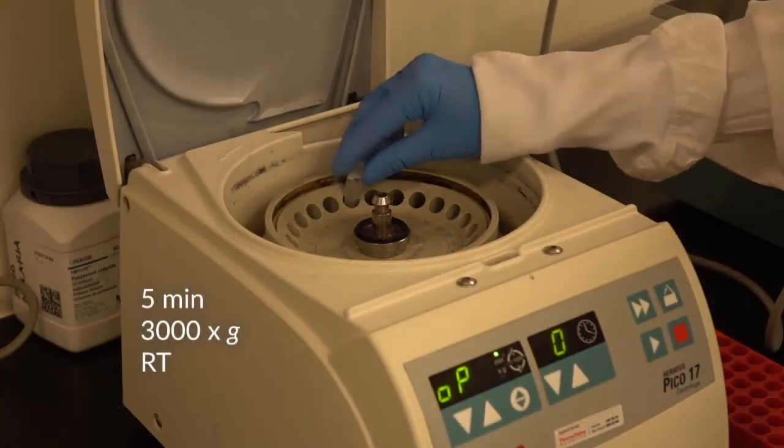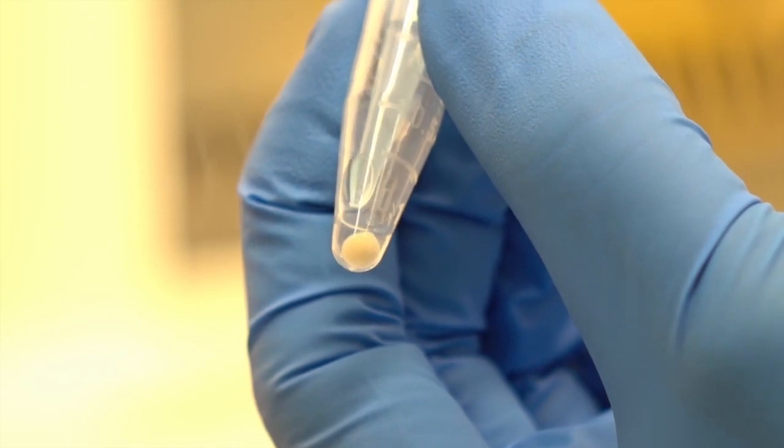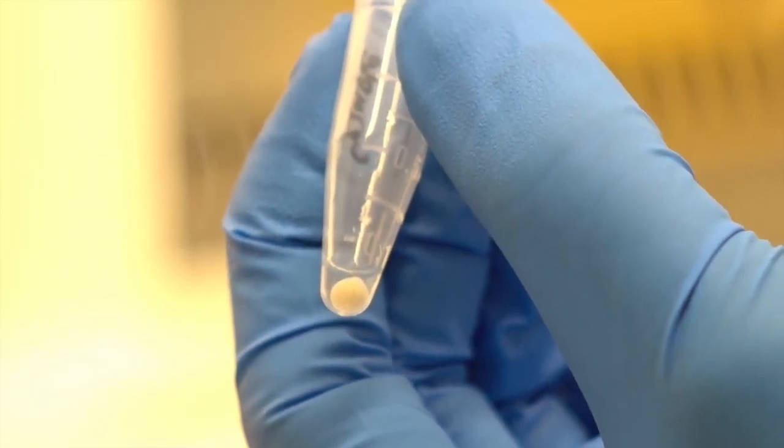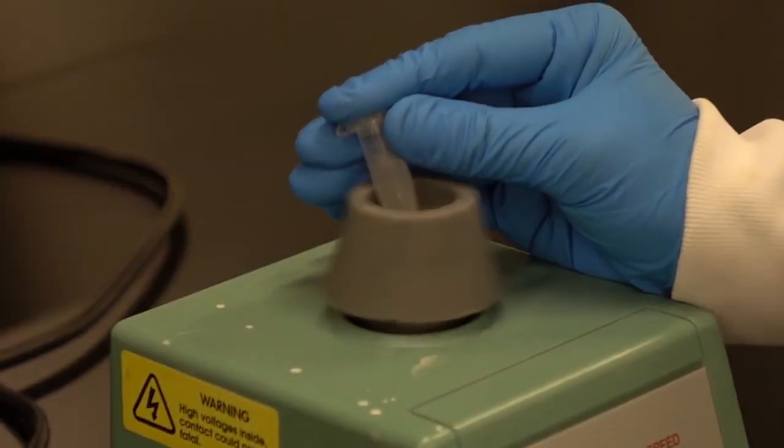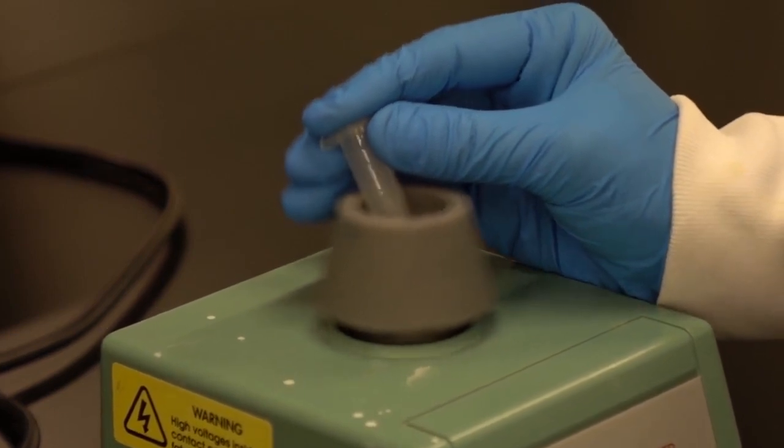Pellet the bacteria by centrifugation and carefully aspirate the supernatant with a pipette. Resuspend the bacterial cell pellet in one milliliter of ultra-pure water.